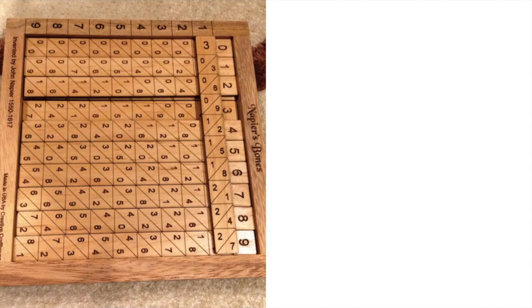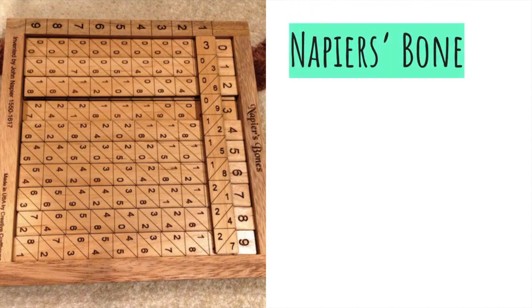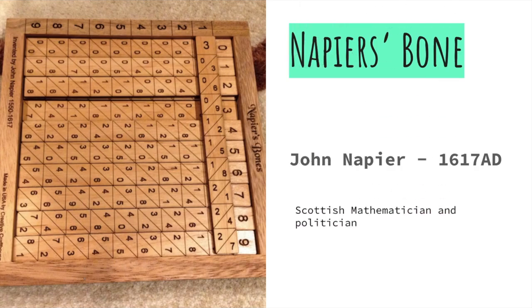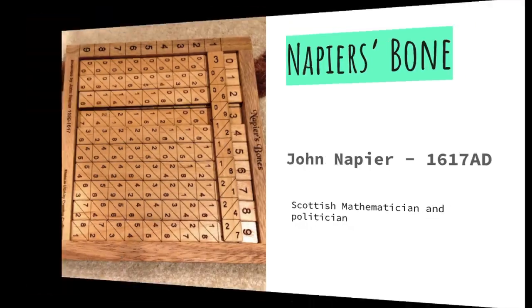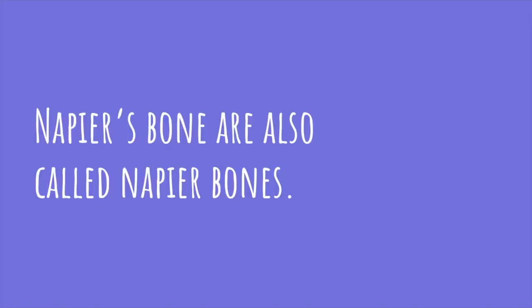Let's discuss the next device that is Napier's bone. Napier's bone was invented by John Napier in 1617 AD. John Napier was Scottish mathematician and a politician. Napier bone is also called Napier bones. You can say Napier's bone or Napier bones.